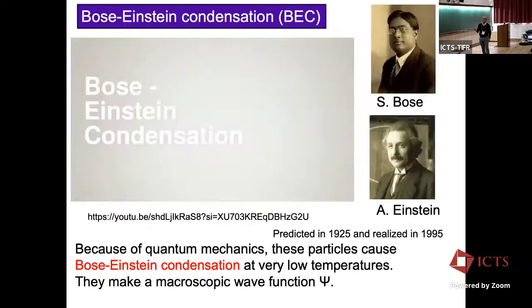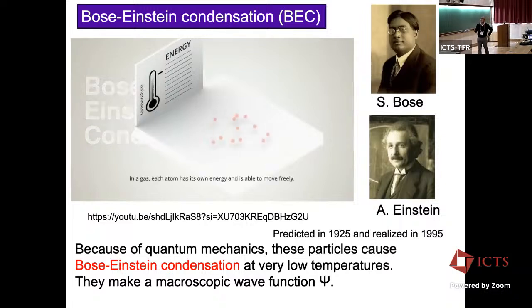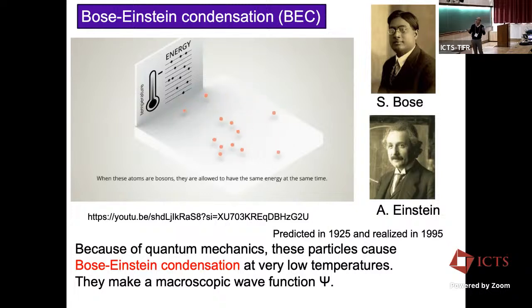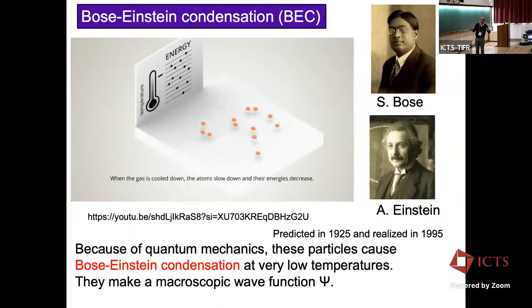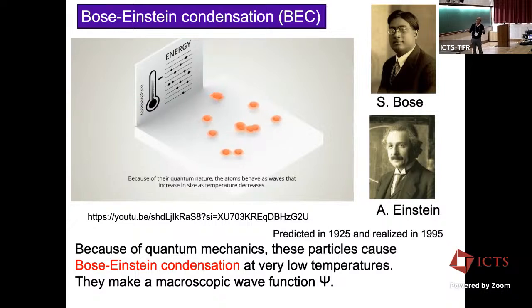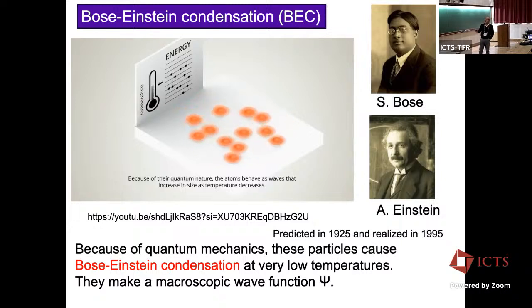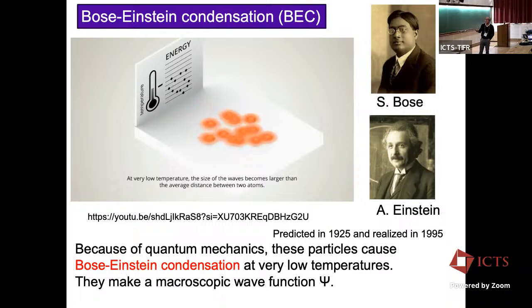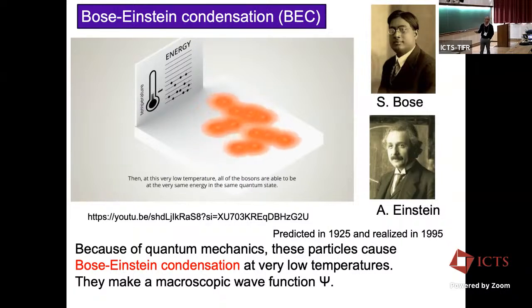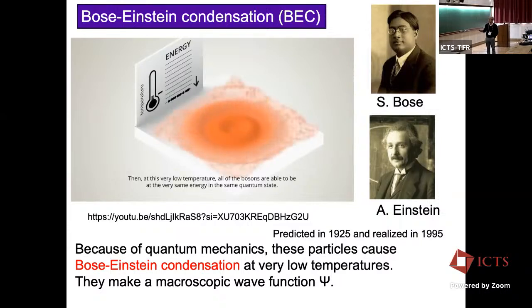First I'd like to show what Bose-Einstein condensates are. Let's consider an ideal atomic gas. At relatively high temperatures, atoms move like particles. But as the temperature is reduced, the kinetic energy is reduced, the motion becomes slow, and the thermal de Broglie length increases. Below some critical temperature, these particles form coherent matter waves. This is Bose-Einstein condensation, predicted by Bose and Einstein in 1925, but realized in cold atoms in 1995. This is a macroscopic wave function side.